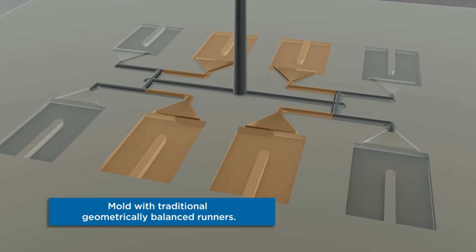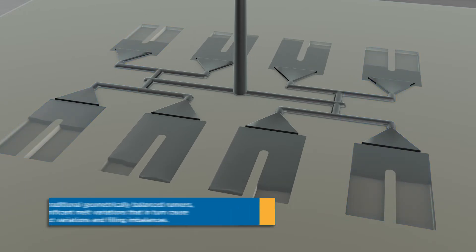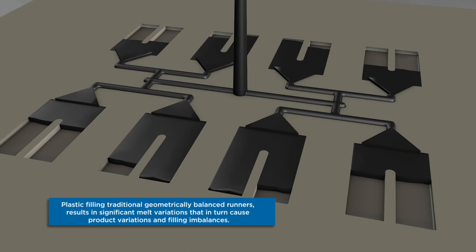The inside cavities are filling faster and the outside cavities are filling slower. These traditional geometrically balanced runners result in significant melt variations that result in product variations and filling imbalances.